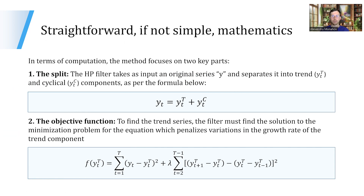Here are the mathematics behind the HP filter. In terms of computation, the method focuses on two key parts. The first is the split: the original series Y is separated into its trend and cyclical components. Then we have the objective function — to find the trend series, the filter looks for a solution to the minimization problem for the equation which penalizes variations in the growth rate of the trend component. Let's investigate this formula in more detail because this is an important one.